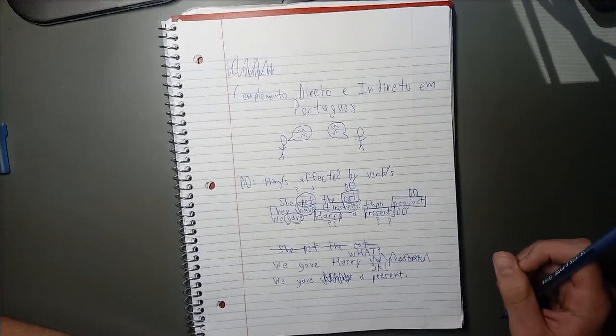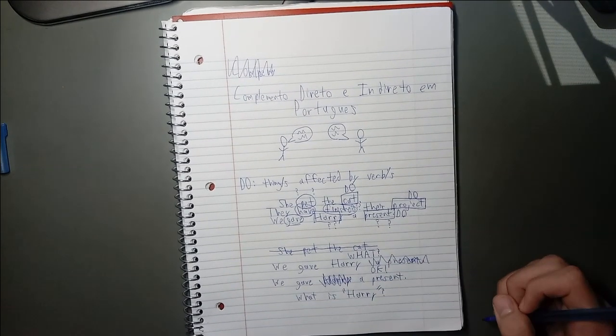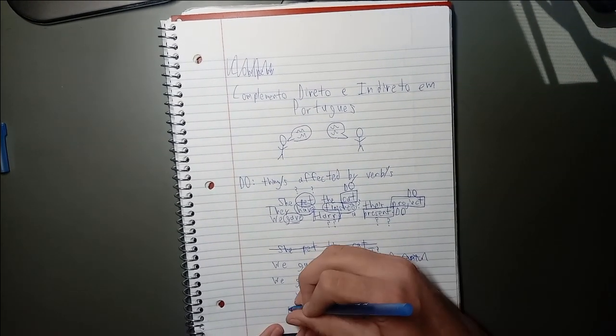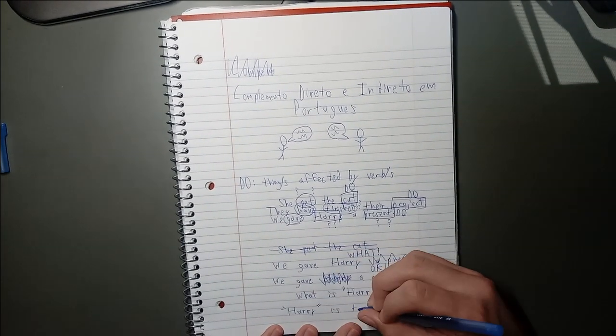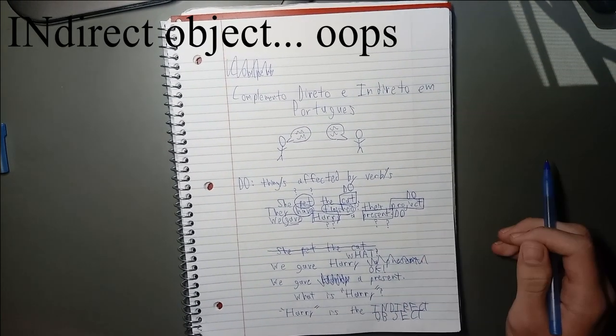So, what do we call the other thing affected by the verb? Or in other words, what exactly is Harry in this sentence? Harry is the indirect object in this sentence. The indirect object is the thing or things secondarily affected by the verb or verbs in the sentence.